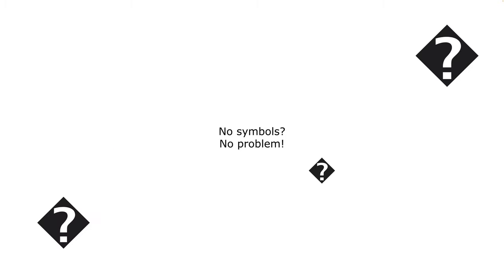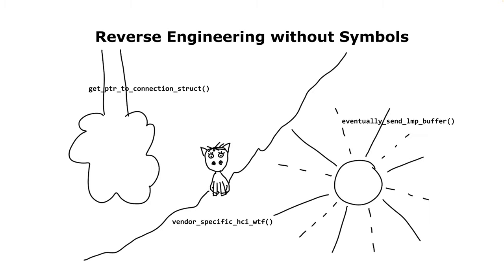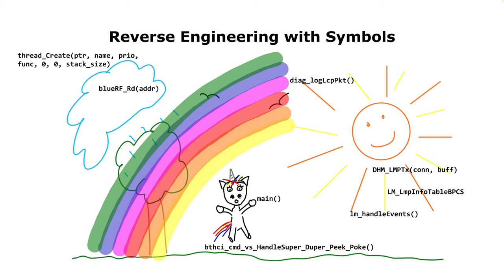Even without symbols there are ways to make source code more readable. You start without any function names and then reconstruct - for example from a Bluetooth firmware without symbols, you start reconstructing how everything could be according to a specification. You might spend a lot of time doing this if you don't have a good idea about what the program is doing. But if you have symbols it's much easier - you know the function name and the arguments. In the end for that particular project we had symbols and it's really nice.